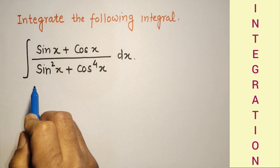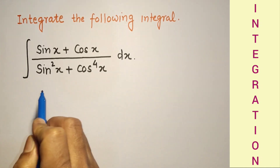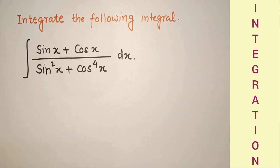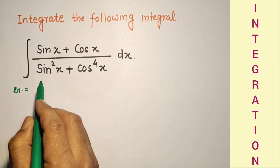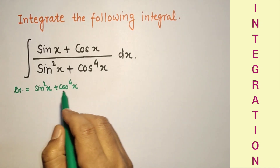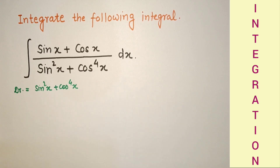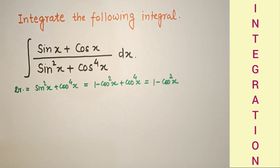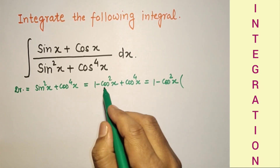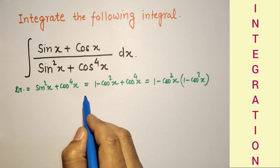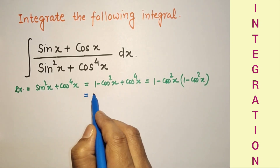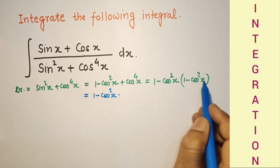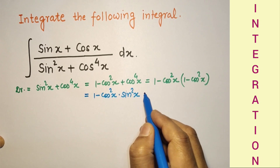To simplify the denominator, we rewrite sin²x as 1 − cos²x. Taking cos²x common, the denominator becomes (1 − cos²x) + cos⁴x. If we take cos²x common from these two terms, we get (1 − cos²x)(1 − cos²x), which is sin²x. This can be further rewritten.